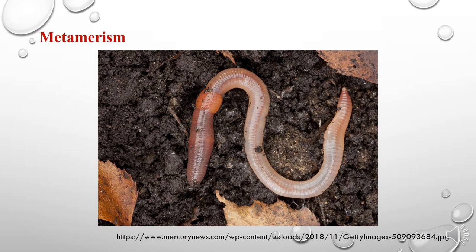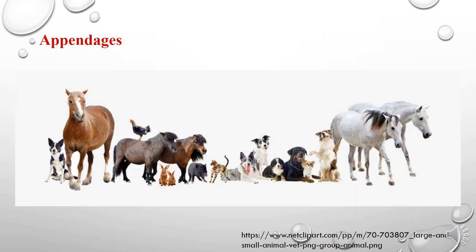Metamerism is the linear repetition of parts in an animal body. Each repeated unit is called a segment, metamere, or somite. This phenomenon is characteristic mainly for phyla such as Annelida, Arthropoda, and Chordata. Appendages are protruding parts of the animal body which serve for locomotion, feeding, and other functions. Examples include tentacles of sea anemones, legs of arthropods, and fins, legs, and wings of vertebrates.